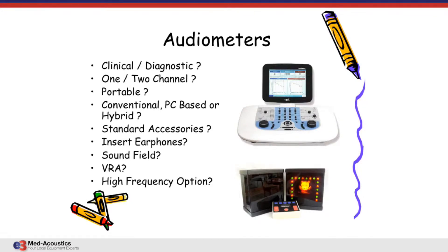Does it have to be portable — are you going to take it to another office or location? When it comes to clinical audiometers, there are basically three categories. There is a conventional audiometer — the GSI 61 is a conventional audiometer where you draw an audiogram. Then there is a PC-based audiometer, like the Madsen Astera. Even though it has knobs and buttons — essentially a custom keyboard — it runs on a computer and without a computer it doesn't exist.